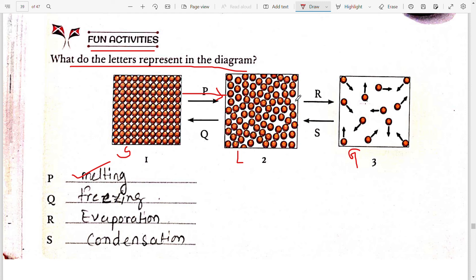Then R, from liquid to gas. The change of liquid to gas is known as evaporation, so arrow R is showing you evaporation. Then gases to liquid. The change in the state gas to change in the state of liquid is known as condensation. So you can write it as condensation.